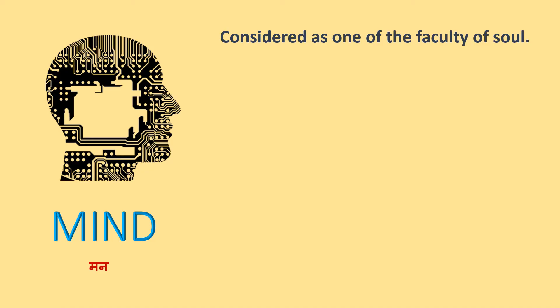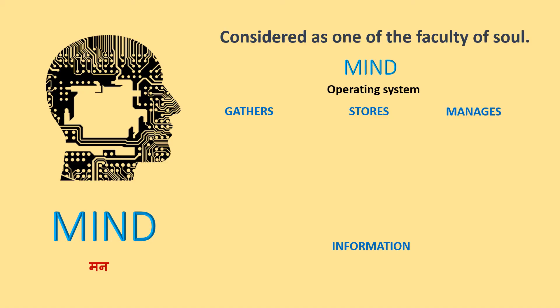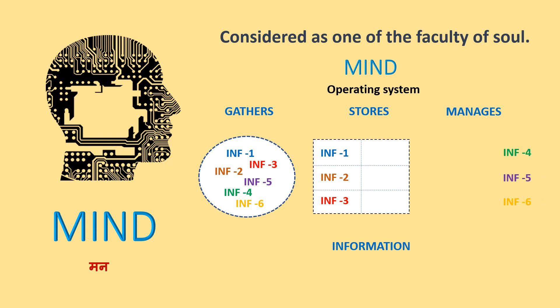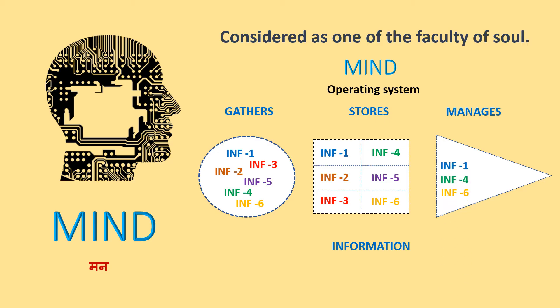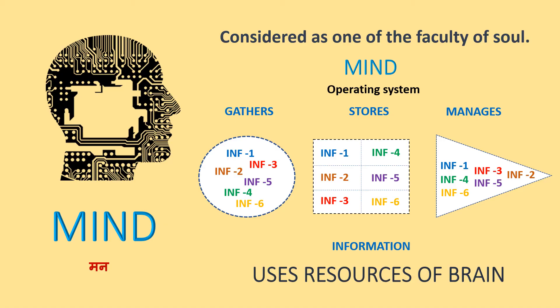Mind is the operating system of the human computer that gathers, stores, and manages information. I'll show you some animations to give you more clarity about what is mind. It gathers information from different sources because we keep on receiving so much information. Its primary responsibility is to gather the information, then it stores that information, and ultimately it manages that information so that the desired outcome can be achieved.